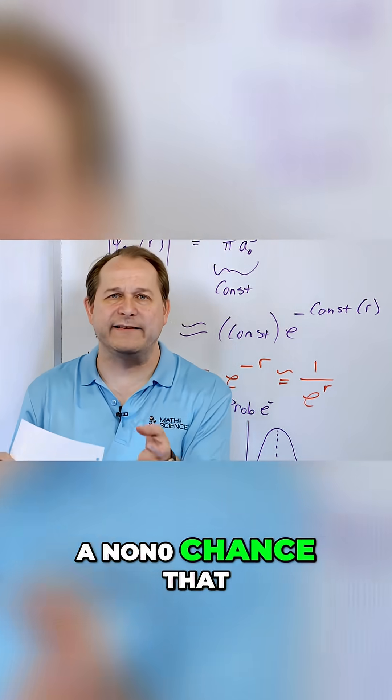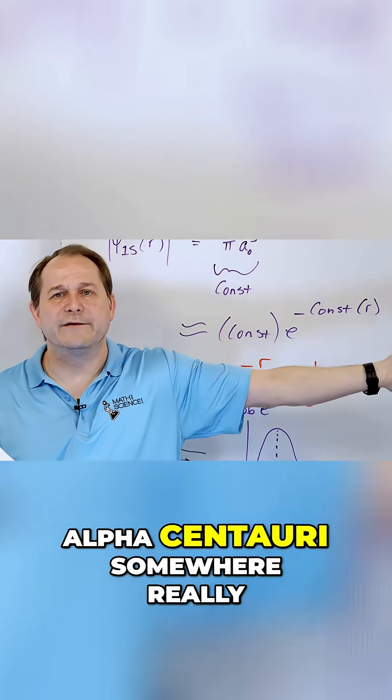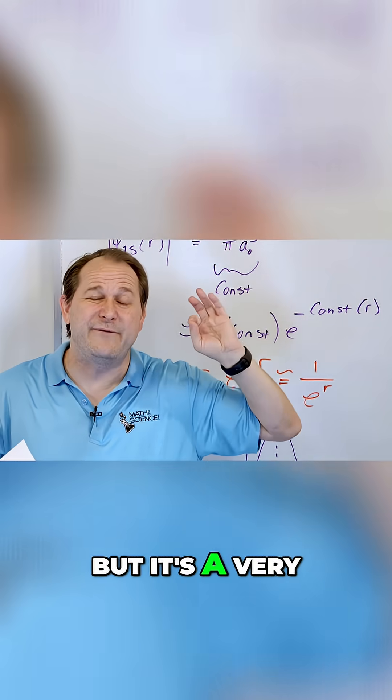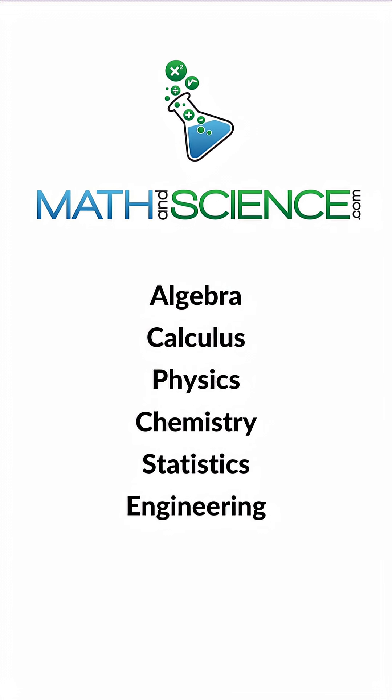So there's a non-zero chance that the electron around my finger here is actually around Alpha Centauri somewhere really far away. But it's a very, very small probability. Learn anything at mathandscience.com.